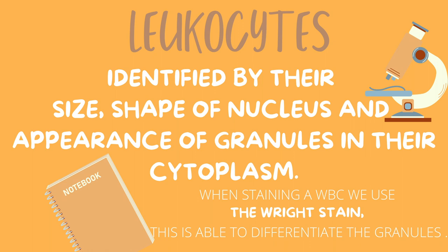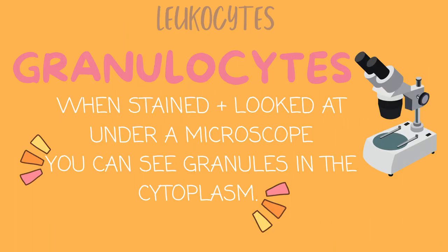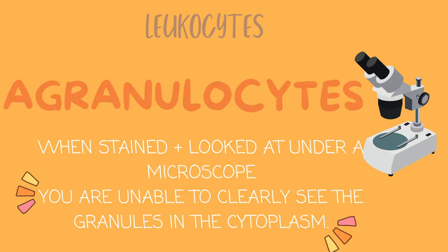When staining a white blood cell, we use the right stain, and this will uncover the granules in the cell cytoplasm and make them more or less visible to us. So if we stain a white blood cell and look at it under a microscope and we are able to clearly see granules in the cytoplasm, this white blood cell is referred to as a granulocyte. If we are unable to clearly see the granules in the cytoplasm, then this white blood cell is referred to as an agranulocyte.